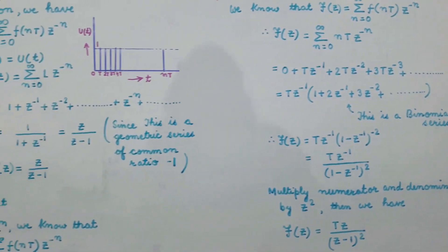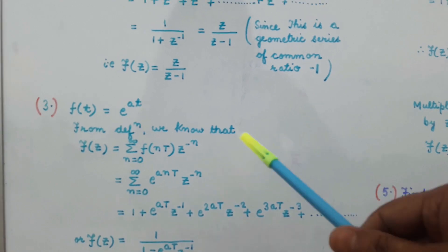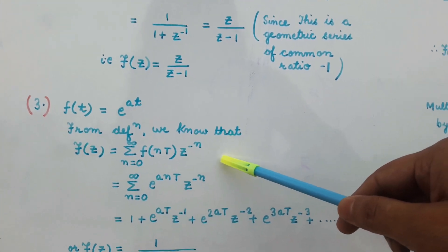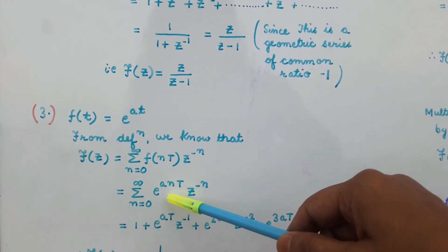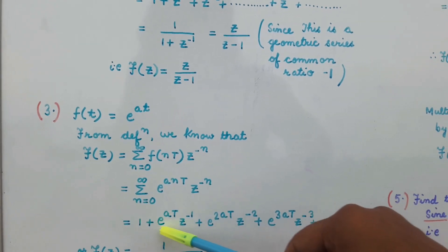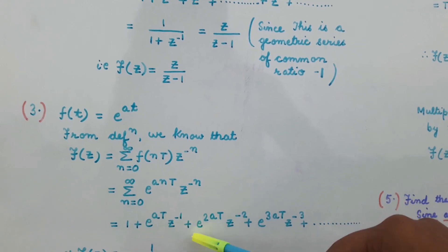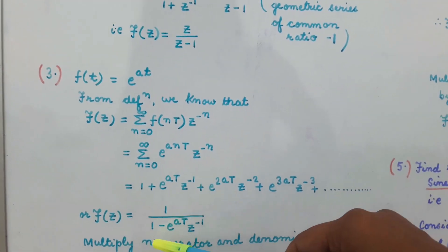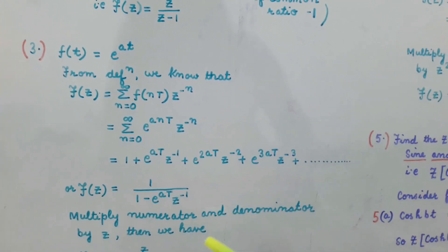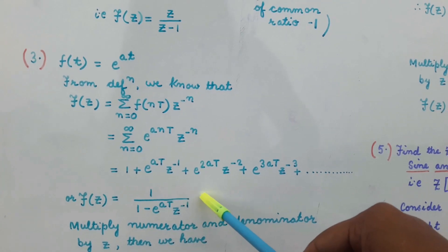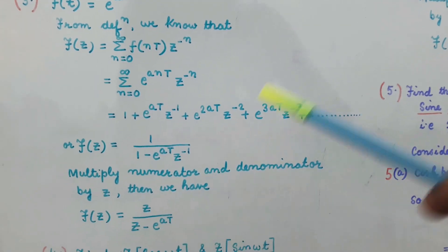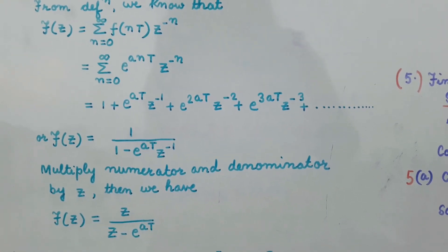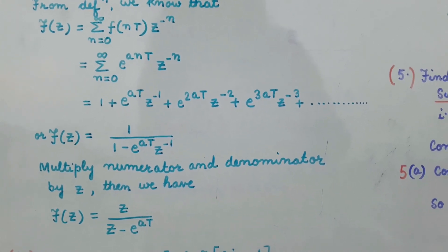After finding the Z transforms of the unit step and ramp functions, we will find the Z transform of e to the power at. On substituting this value in the formula for Z transform, we get F(Z) = summation n=0 to infinity of e^(anT) into Z to the power minus n. For different values of n, this becomes 1 + e^(aT) Z^(-1) + e^(2aT) Z^(-2) and so on. Multiplying numerator and denominator by Z and simplifying, F(Z) = Z / (Z - e^(aT)). So the Z transform of e^(at) is Z / (Z - e^(aT)).